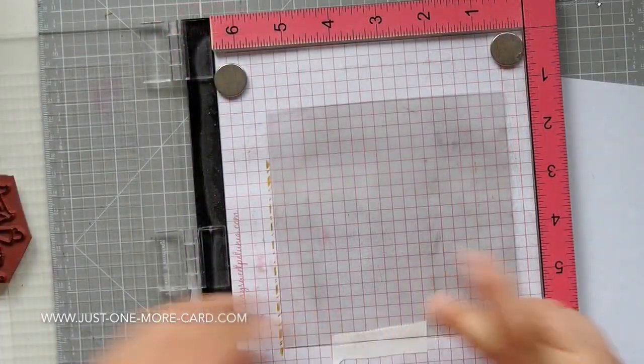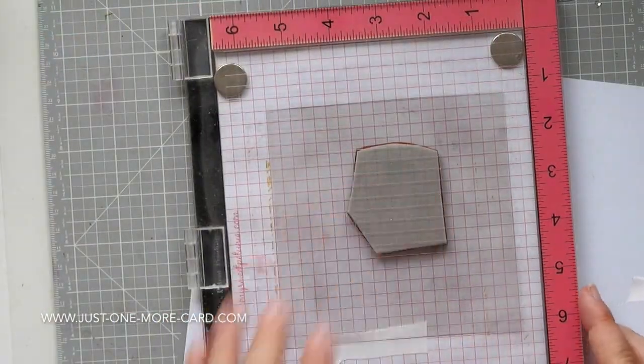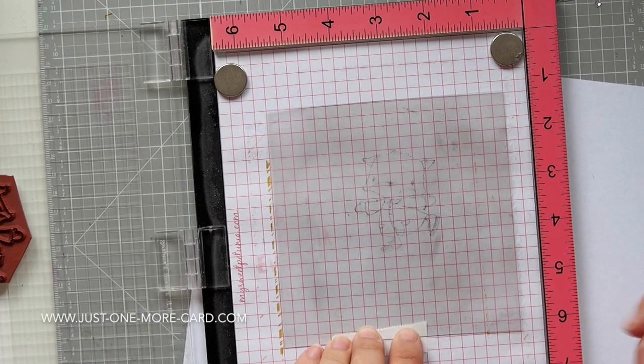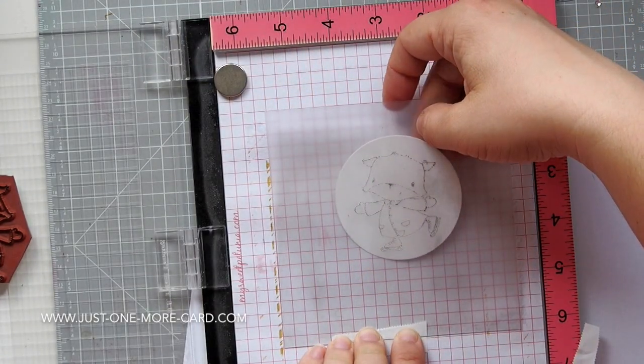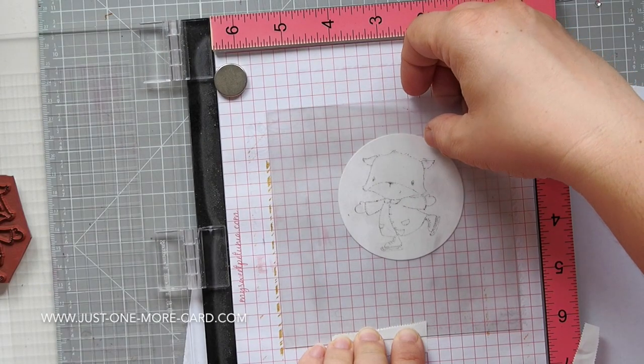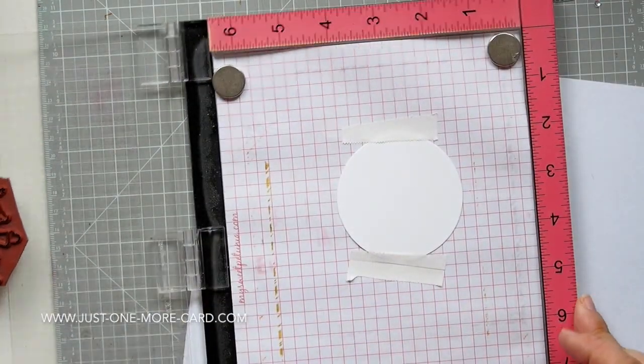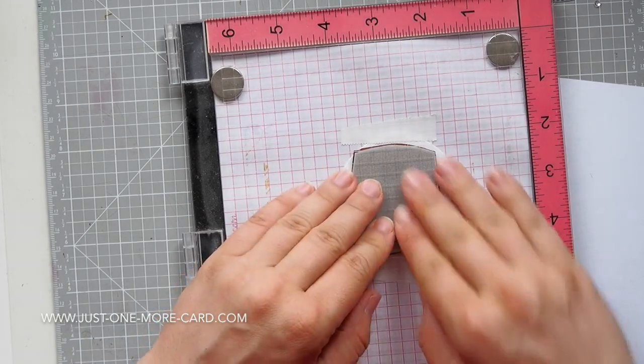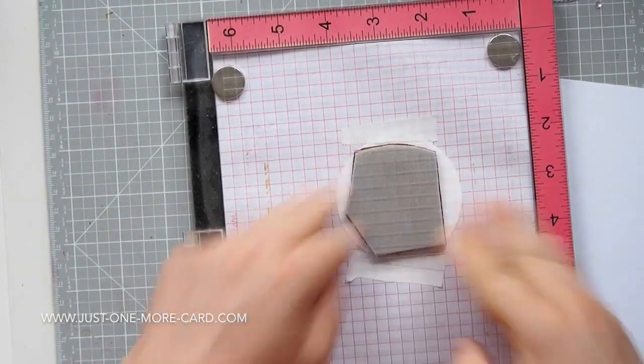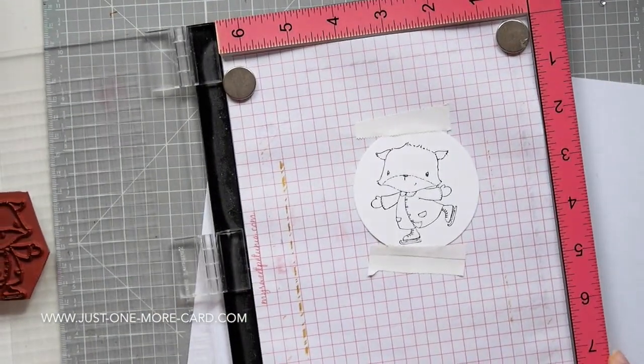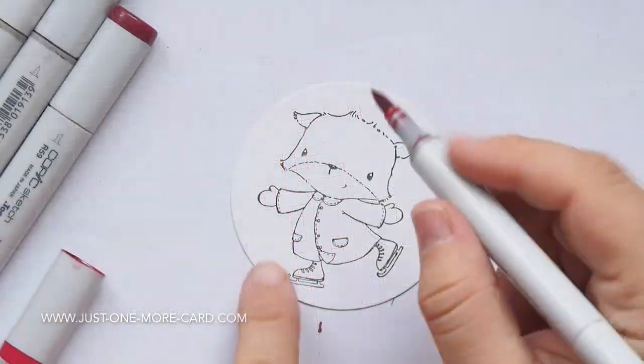I'm stamping my little fox here and sliding the leftover piece of paper that I had underneath there to make sure it's in position, holding it down with some tape and then stamping it as well. I'm using My Favorite Things hybrid licorice ink because that works well with Copics, watercolors, and pencils.